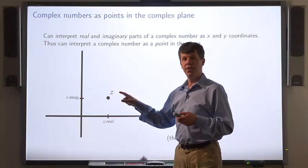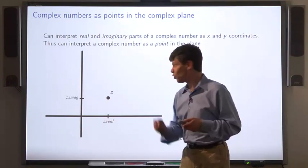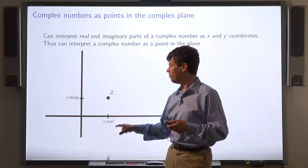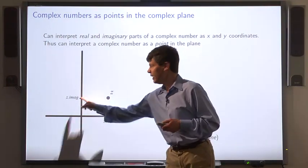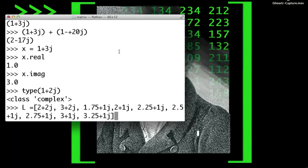So here, the complex number z is represented as a point. Its x coordinate is its real part and its y coordinate is its imaginary part. Now, I'll illustrate the idea of complex numbers as points in the complex plane by plotting some complex numbers.